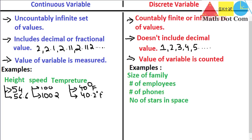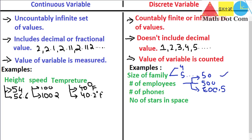In the case of discrete variable, examples include size of family, number of employees, number of phones, and number of stars in space. For all these, the size of a family could be 4 or 5 — these are definite discrete numbers. You cannot say the size of a family is 4.5 or 6.2. You are counting the number of family members rather than measuring them. Similarly, number of employees can be 50, 500, or 600, but never 600.5. In discrete variable, a decimal value is not allowed.